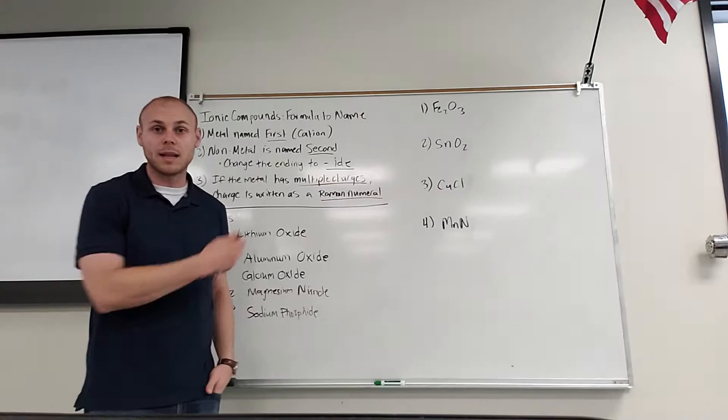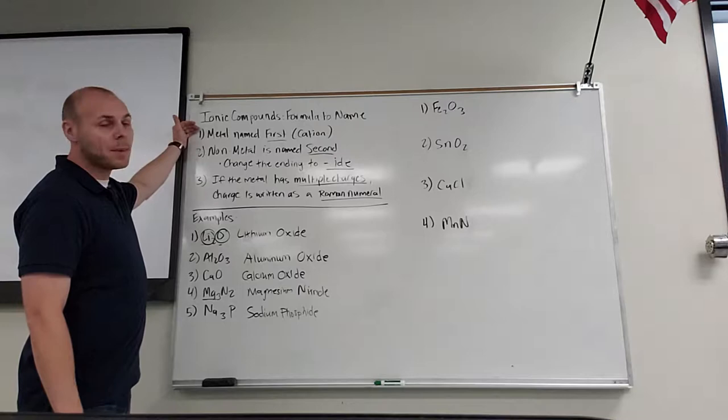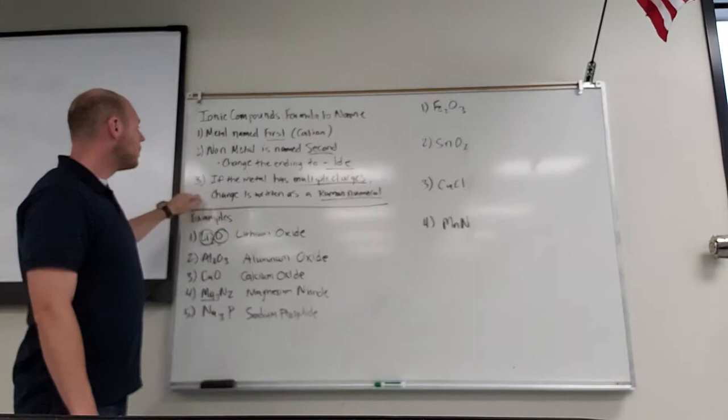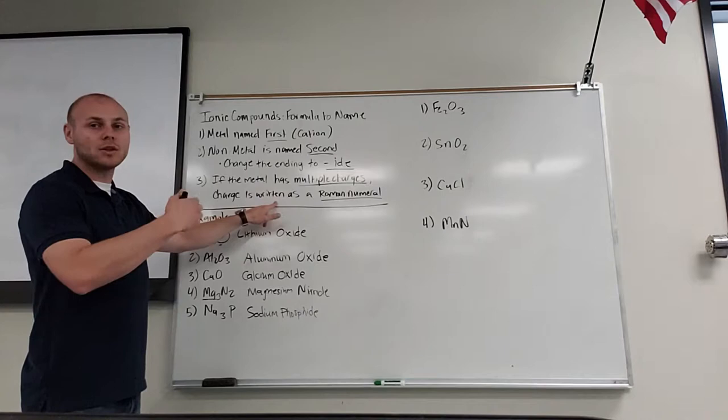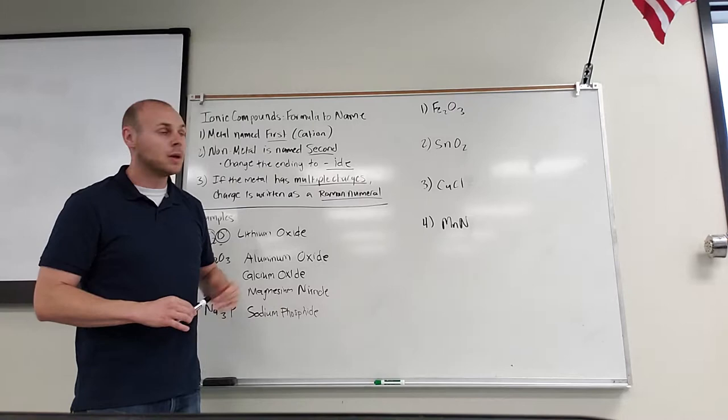The third step in our naming is: name the metal first, then name the anion changing the ending to "-ide". But if the metal has a multiple charge because it's a transition metal, we actually have to write the charge in the name. How do we write the charge in the name? We represent it as a Roman numeral. So we're going to practice this on these four examples.